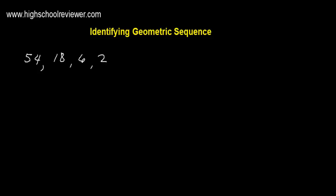To identify if a set of numbers is a geometric sequence, we are going to divide the different sets of succeeding numbers. For example, we have here 54 and 18, then 18 and 6, and then 6 and 2. To divide, we are going to put the number on the right side on the numerator — this will be 18 — and the number on the left will be the denominator — this is 54.